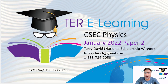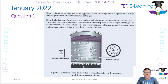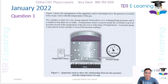Hi guys, it's Terry here. In this video I'm going to be looking at the solutions to the January 2022 physics paper. Figure one shows the arrangement of the apparatus used to investigate how the pressure of a fixed mass of gas varies with temperature. The cylinder is made of a very strong material which allows it to withstand high pressures and it is sealed so that there are no leaks. A temperature sensor is placed inside the cylinder to give an accurate record of the temperature of the gas over a wide range of temperatures. A pressure gauge is also placed in the cylinder to record the pressure readings.